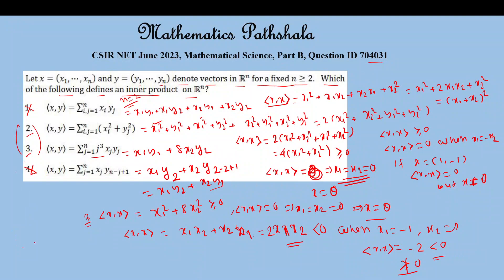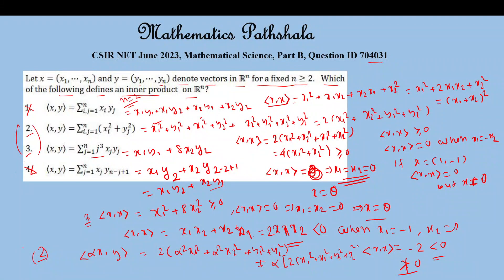Now we check the homogeneity property for Options 2 and 3. For Option 2, the inner product of (αx, y) gives 2(α²x1² + α²x2²) + y1² + y2², which is not equal to α times the inner product of (x, y). So the homogeneity property is not satisfied for Option 2, and Option 2 is also not an inner product. Therefore Option 3 should be the correct answer. Verifying the remaining properties for Option 3 is left as homework.